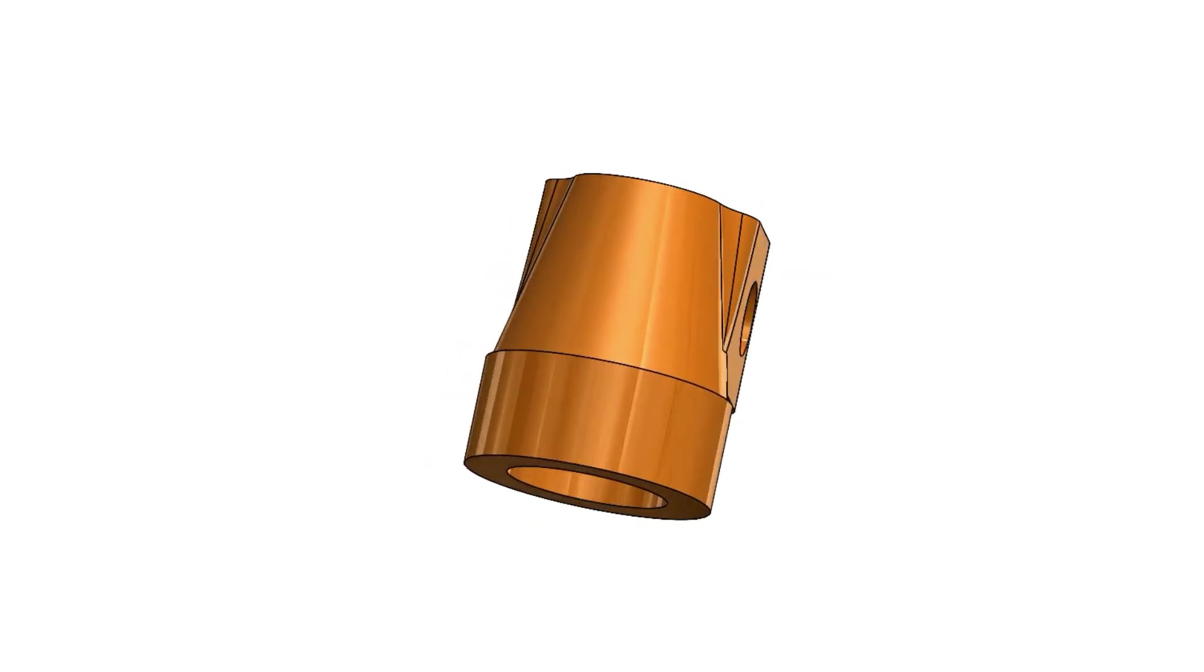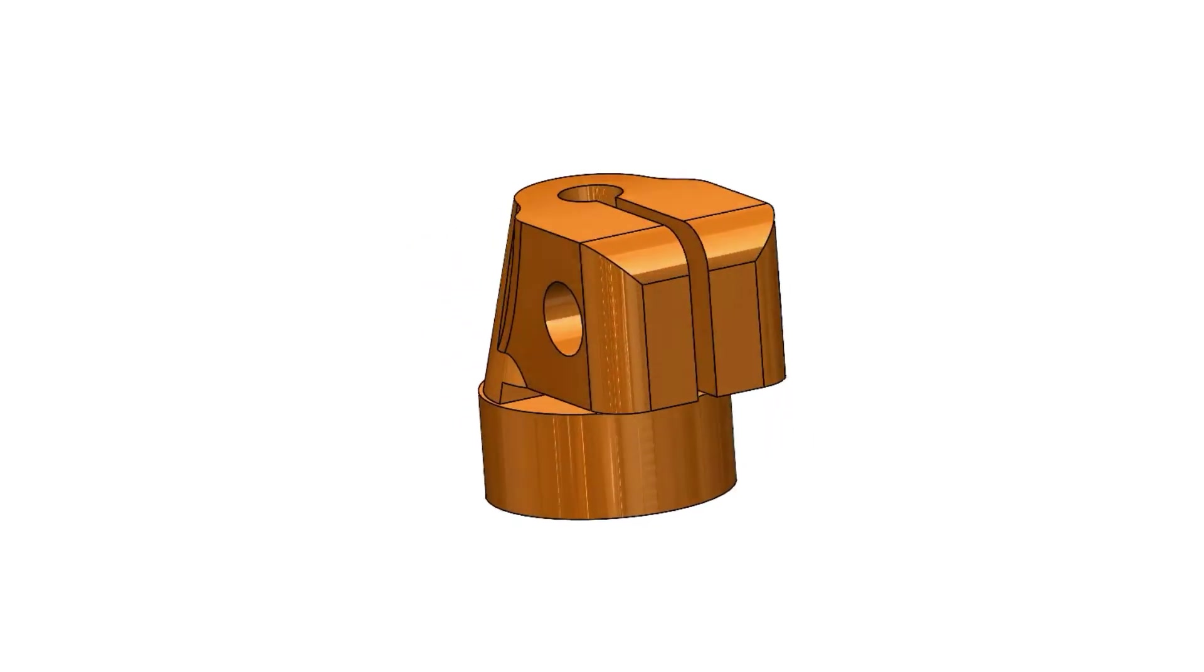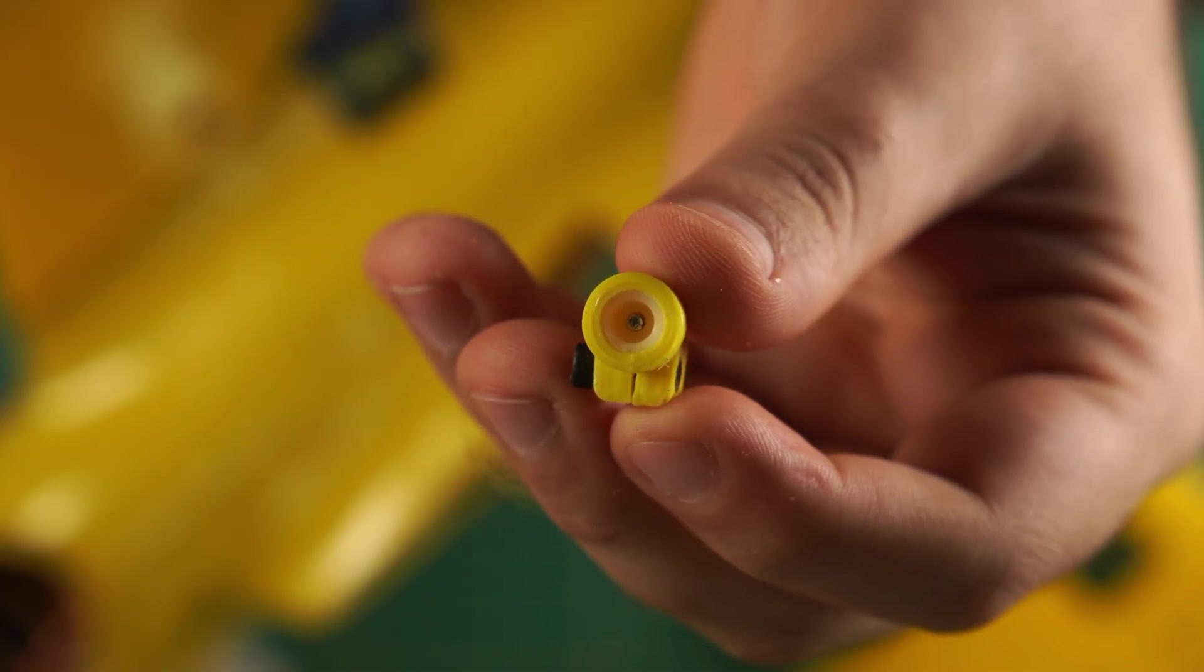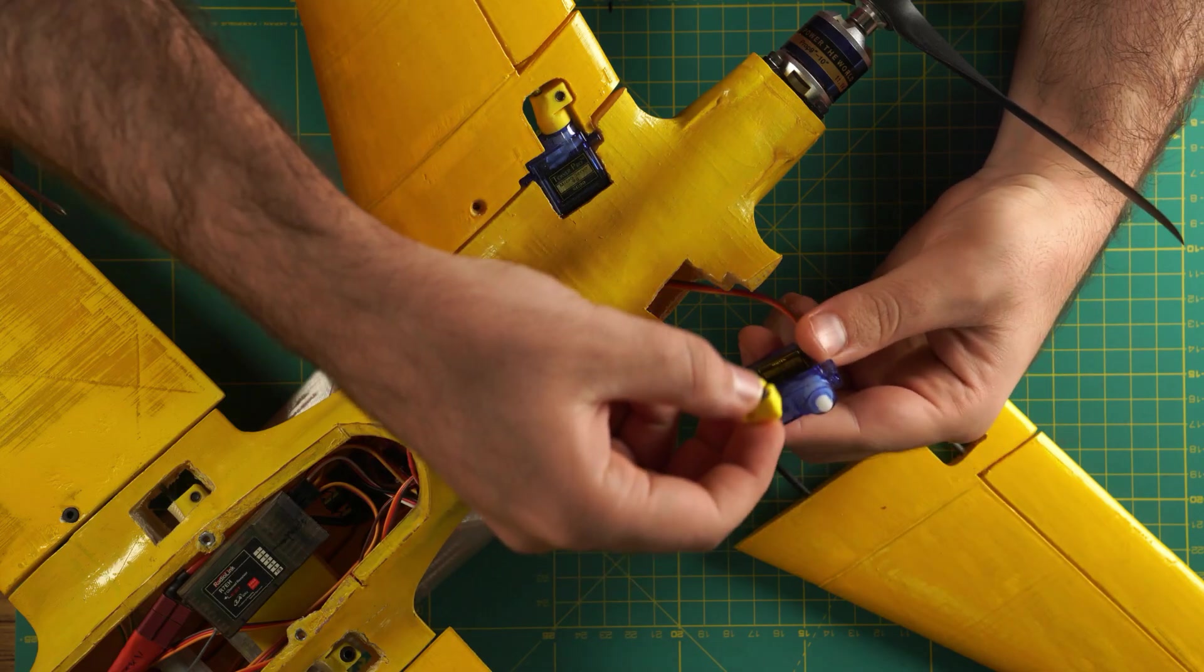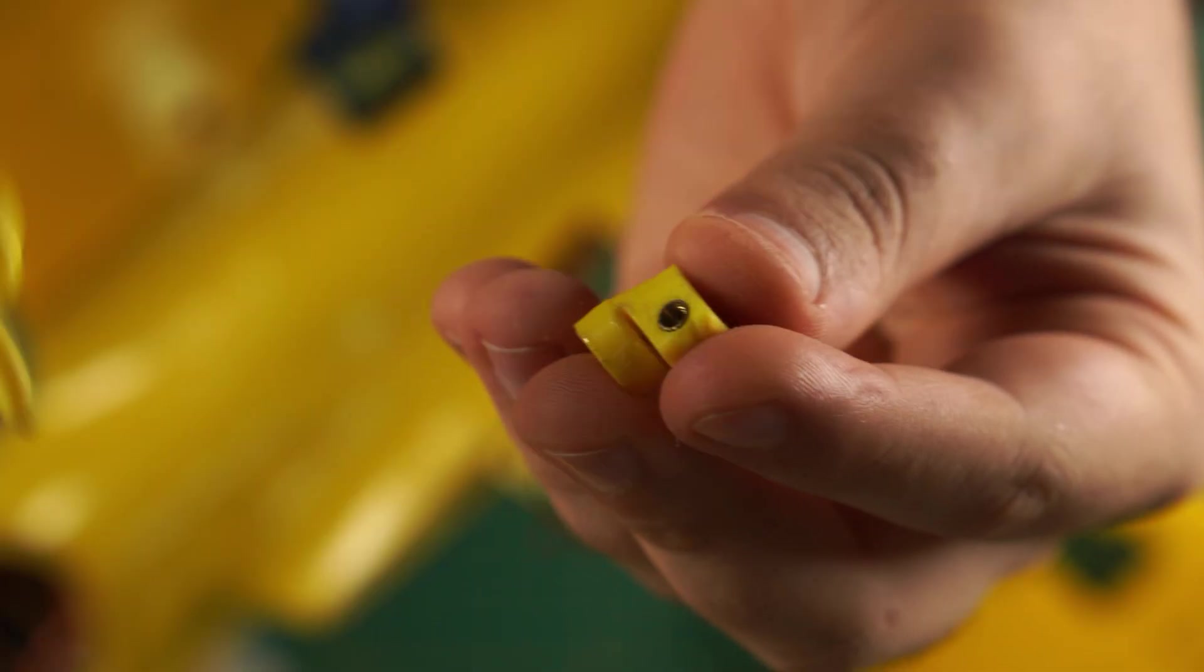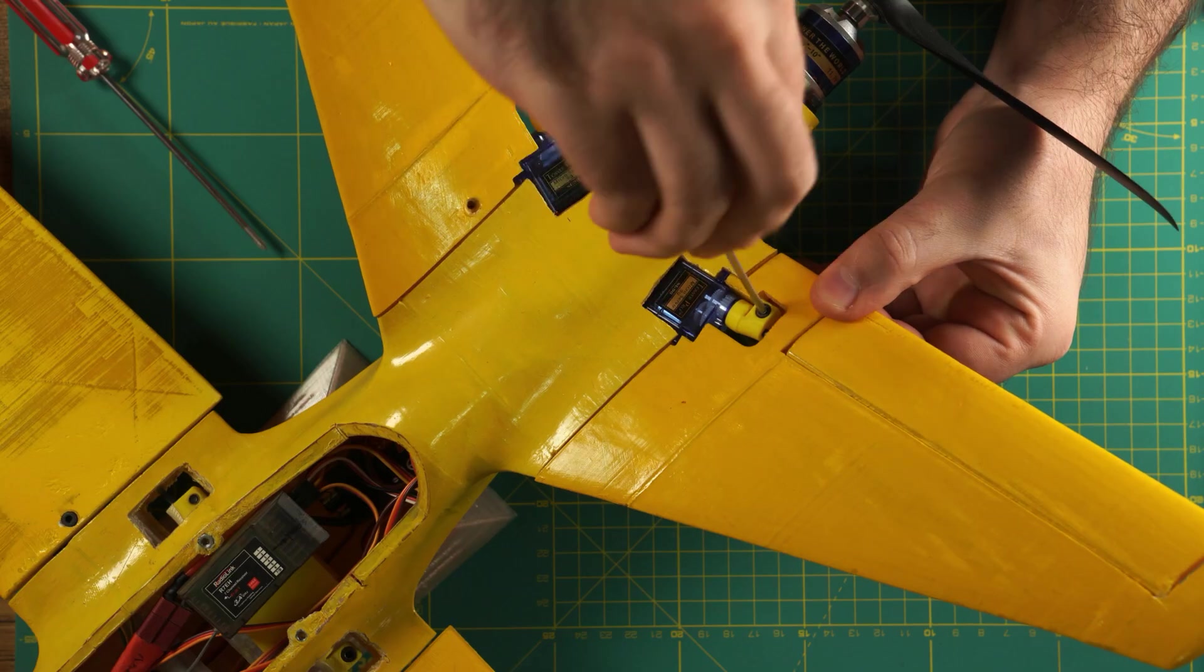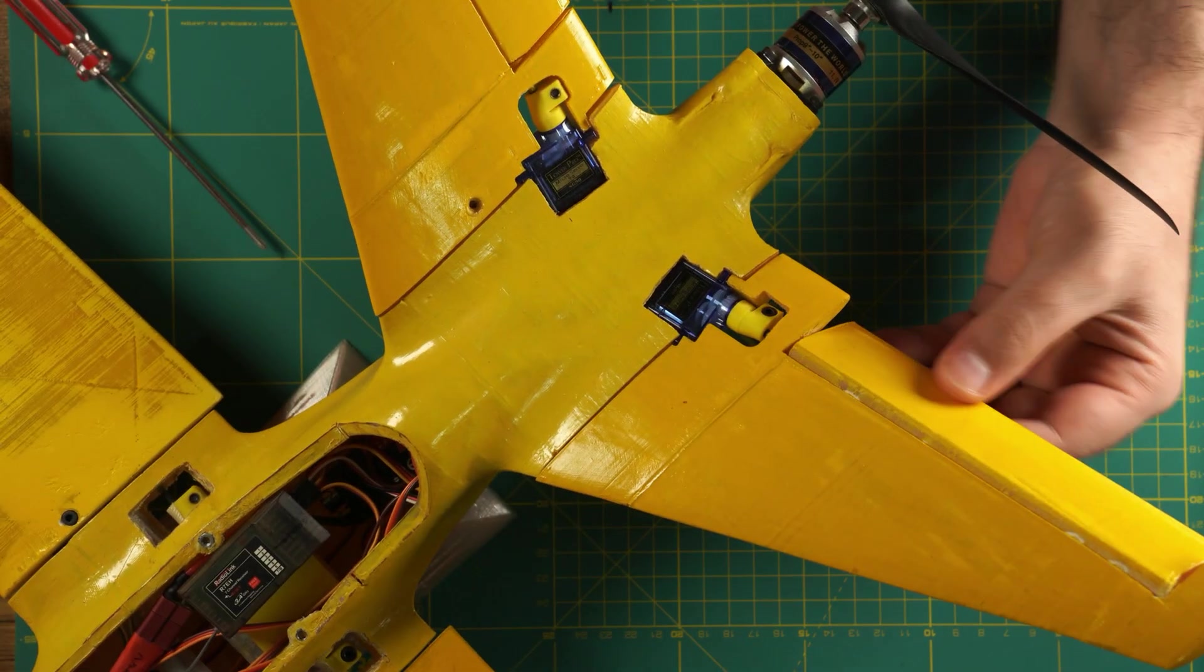I designed this part in SOLIDWORKS and printed it using regular PLA. Then I cut the central shaft connection out from the stock horn and glued it inside the 3D printed part, so you can put it on the servo and fix it there using the screw. For the other side, I used this M3 threaded insert and a bolt, which allows us to fix the control surface axis on the other side of the coupler.